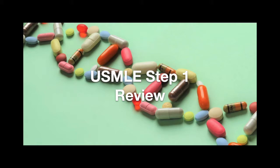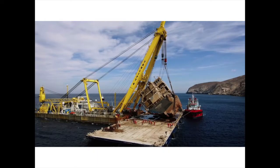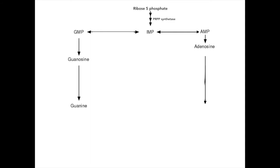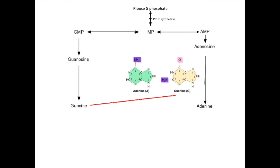Welcome to the Step 1 Review Study Guide. In this lesson, we learn about the purine salvage pathway and deficiencies. We talked about purine-based synthesis in another video, where PRPP from ribose-5-phosphate can become IMP and then AMP or GMP, which can give rise to the bases guanine and adenine — the purines.